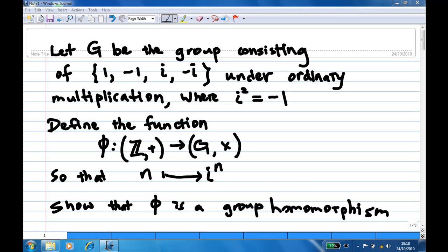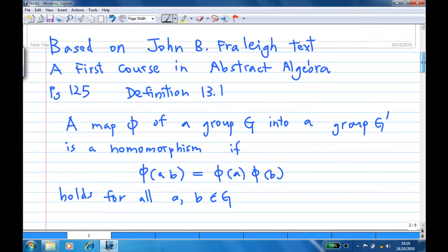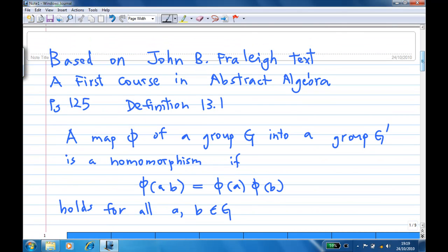Let's recall what is meant by that. Based on John B. Fraleigh's text, A First Course in Abstract Algebra, page 125, definition 13.1: A map φ of a group G into a group G prime is a homomorphism if φ(a·b) = φ(a)·φ(b) holds for all a, b in G.